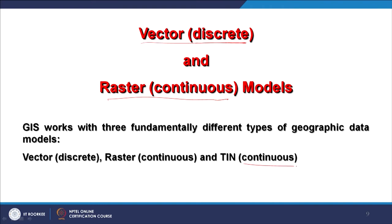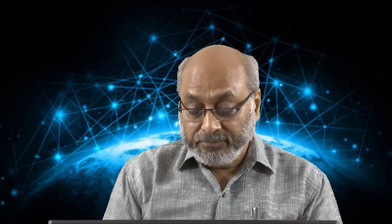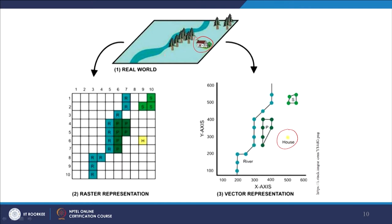TIN is also considered continuous like raster, but conceptually it is different. If the real world has to be represented in these two different models — raster and vector — how would it be done? In vector data, depending on the scale, a house is represented as a point, a river is represented as a polyline despite having width in the real world, and a forest is represented as a polygon. All three vector entities can be used to represent the real world.